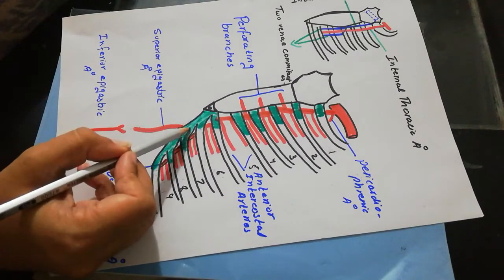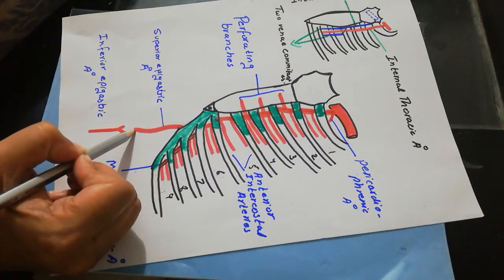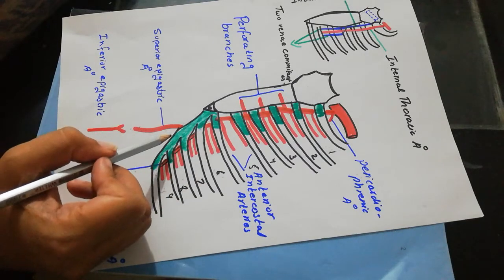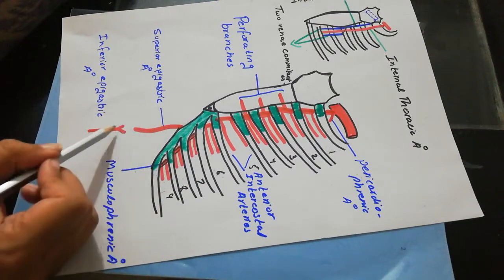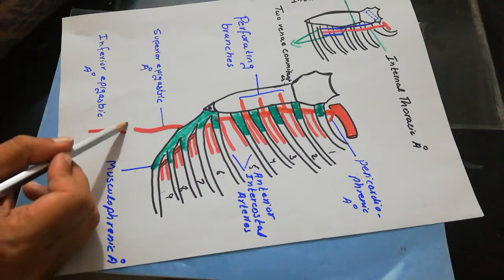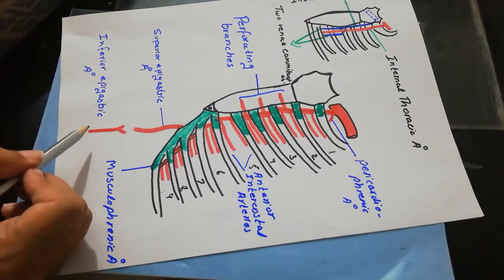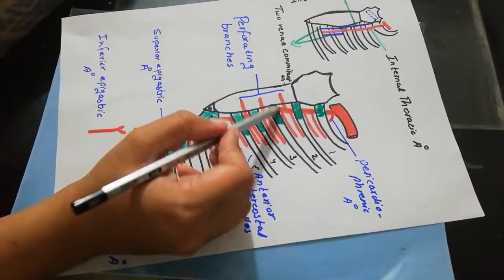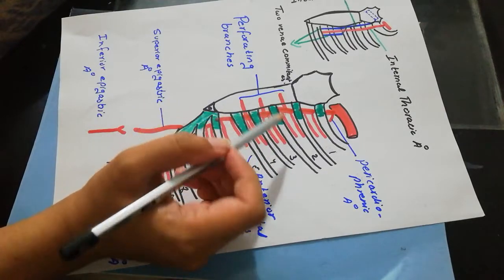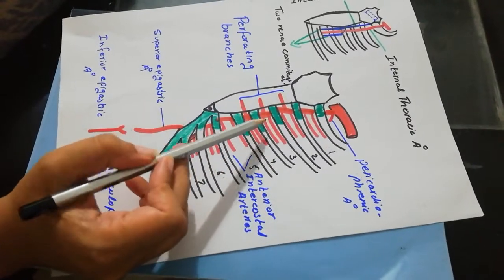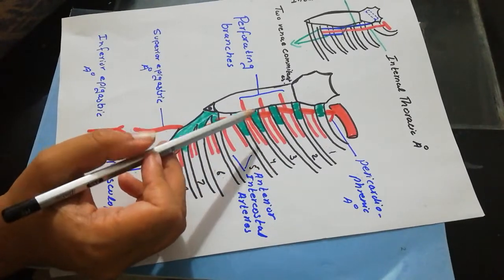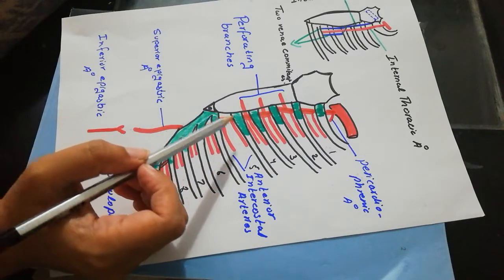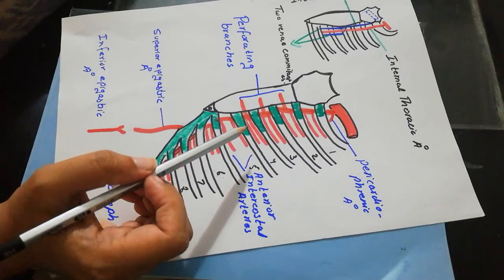The superior epigastric artery passes between the sternal and costal origins of the diaphragm and anastomoses with the inferior epigastric artery. The internal thoracic artery also gives perforating branches; the perforating branches of the 2nd, 3rd, and 4th intercostal spaces are larger in females to supply the breast.